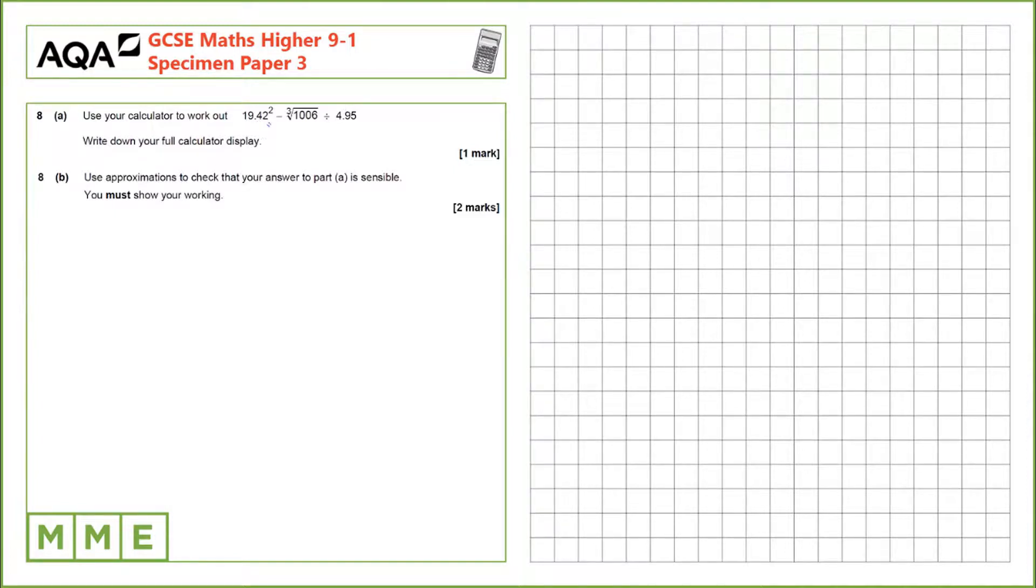All we need to do here is input this into the calculator. The only thing to remember is if we're using our order of operations, BODMAS, that division will come before addition and subtraction. But just to make sure, we'll put this in brackets in the calculator to get the correct answer.